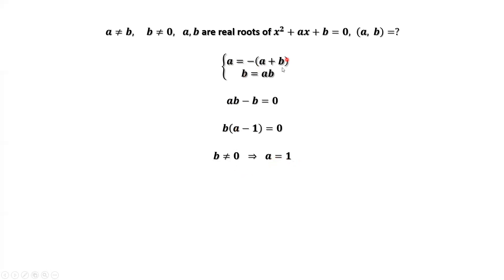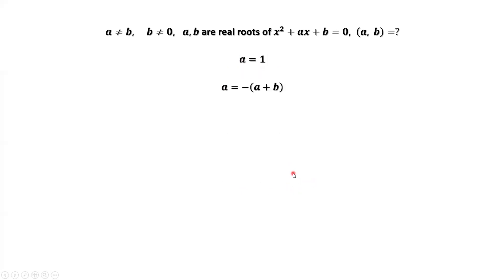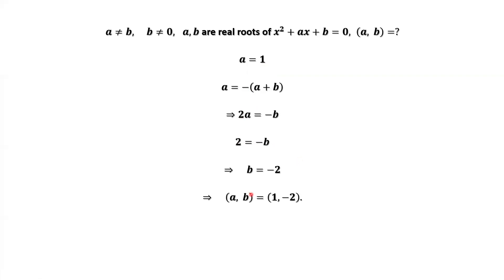From the first result, a equals negative (a plus b), which gives us 2a equals negative b. Replacing a by 1, we have 2 equals negative b, therefore b equals negative 2. We find the answer: a, b equals 1, negative 2.